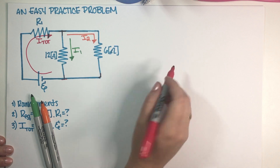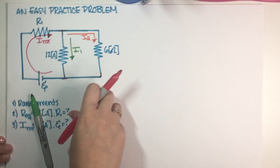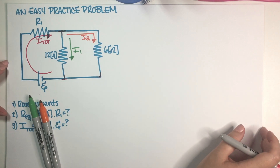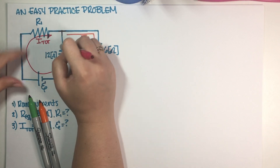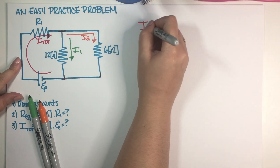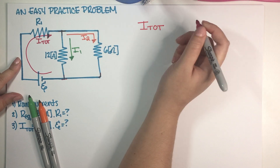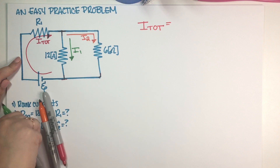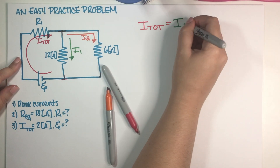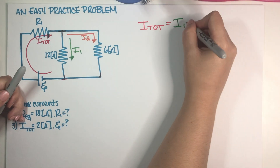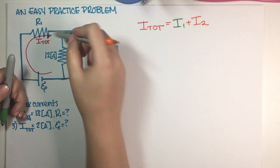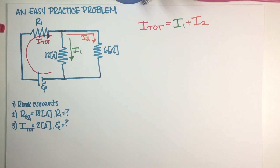Going back to our continuity equation — whatever comes in has to go out, just like in fluids. What's coming into this junction is the total current, and that has to equal what's going out. In this case, that would be I1 plus I2. This is our continuity equation for this junction: we look at what's going in, we look at what's going out, and we set them equal.